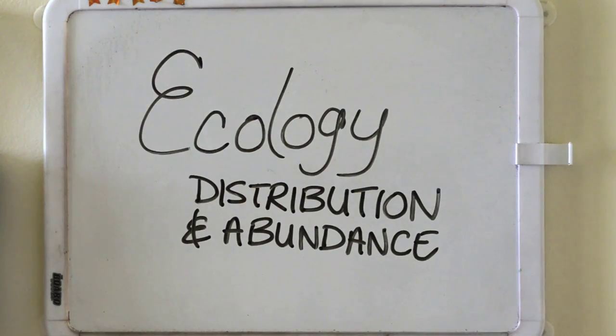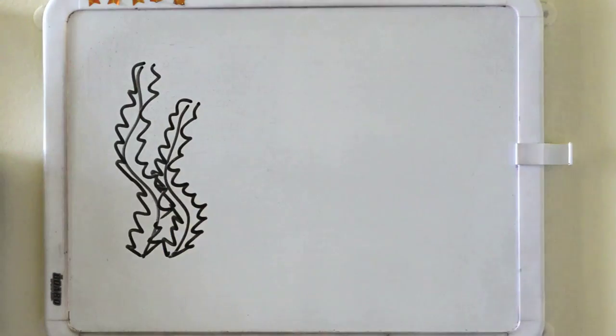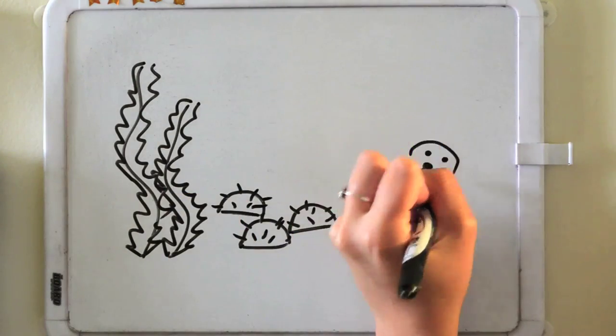Welcome to an ecology lesson on population distribution and abundance. Today we will be going over a well-known example involving sea kelp, sea urchins, and sea otters.